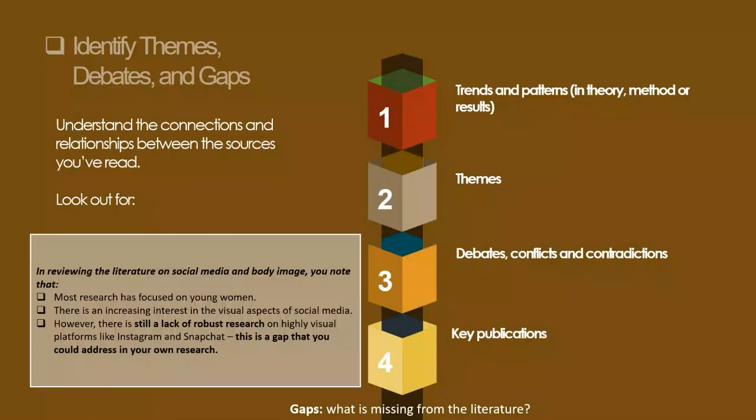After identifying trends, look at themes — what questions or concepts are repeated across the literature. What are the debates, conflicts, and contradictions? Where do sources disagree? What are the key publications? Are there any influential theories or studies that changed the direction of the field? What is missing from the literature — what are the gaps? This step will help you work out the structure of your literature review and show how your own research will contribute to existing knowledge.